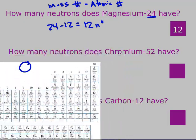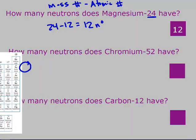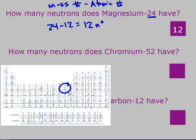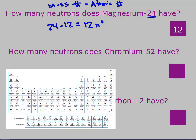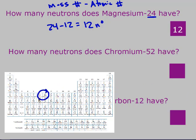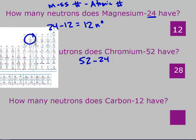Pause the video and find the neutrons for chromium-52 and carbon-12. Chromium has an atomic number of 24, so 52 minus 24 gives 28 neutrons. Carbon has an atomic number of 6, so 12 minus 6 gives 6 neutrons for carbon.